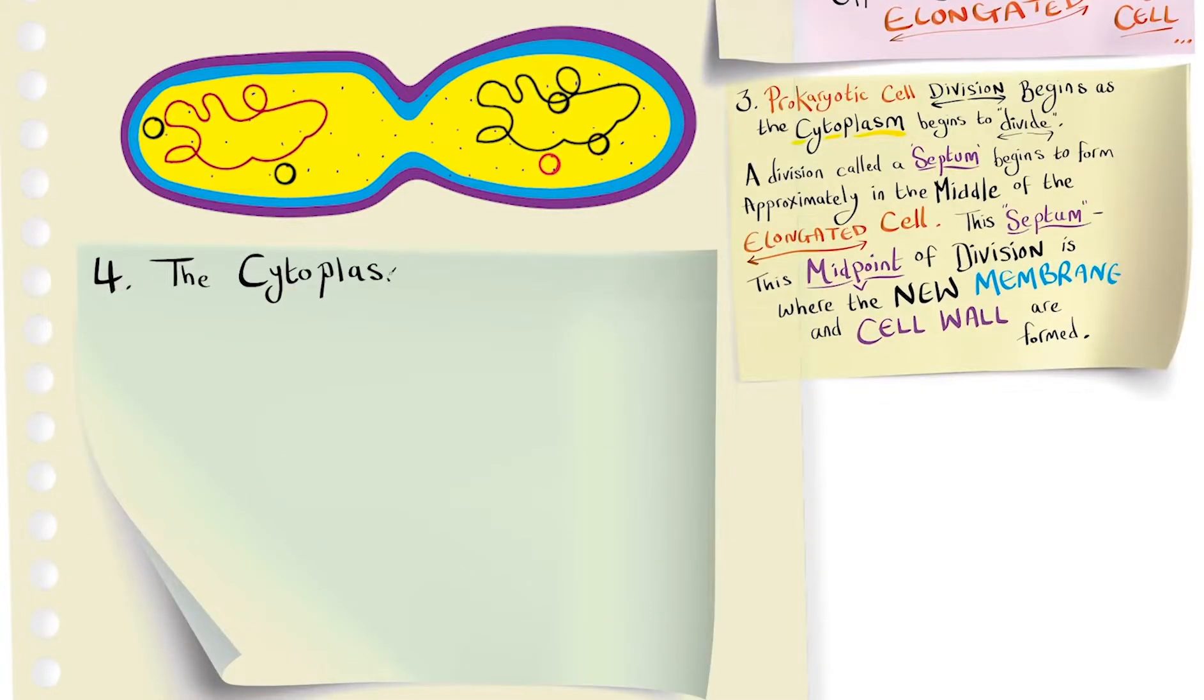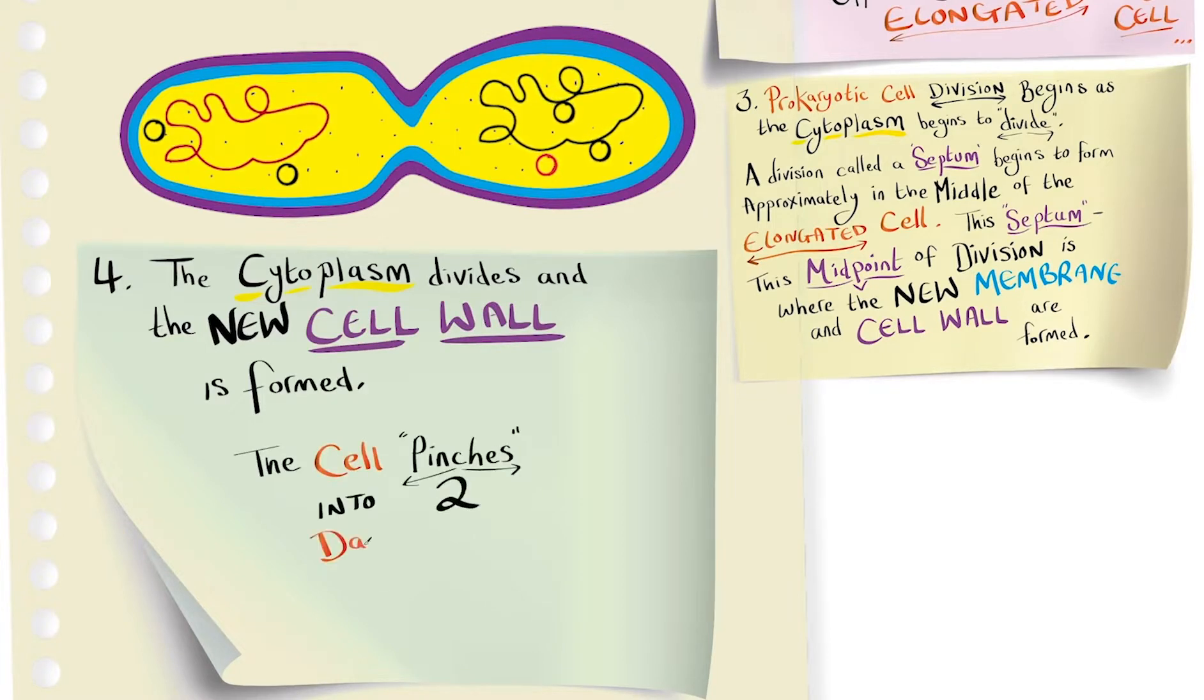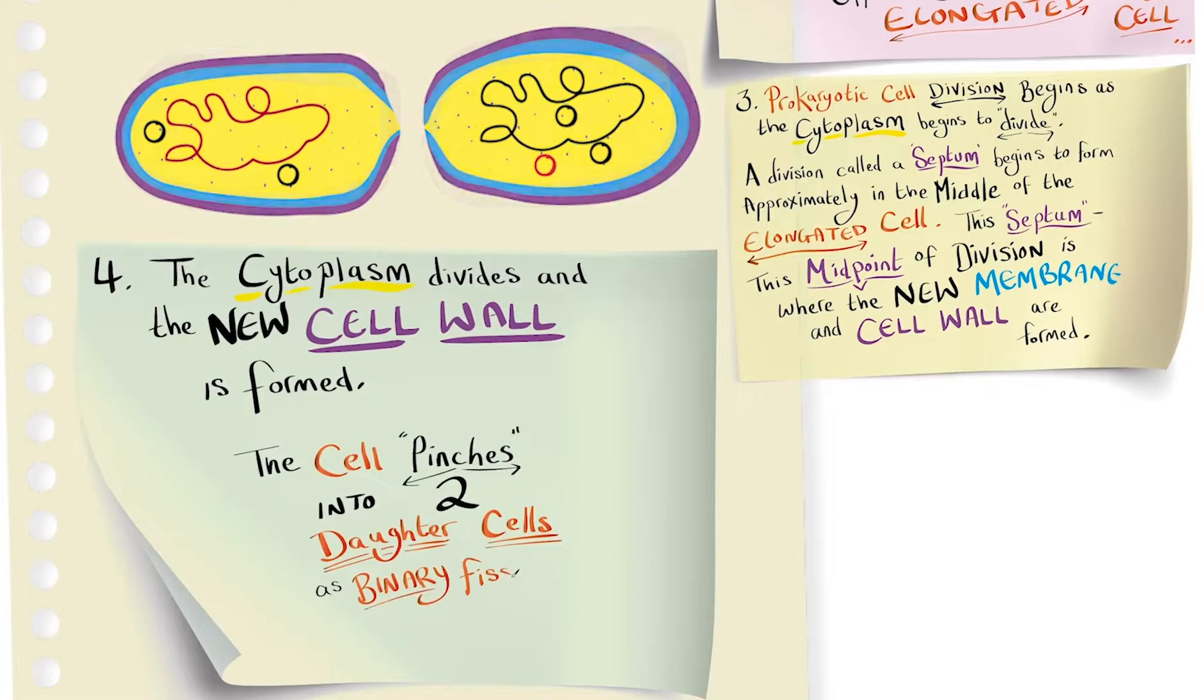In step four, the cytoplasm divides and the new cell is formed. The cell pinches into two daughter cells as binary fission is completed.